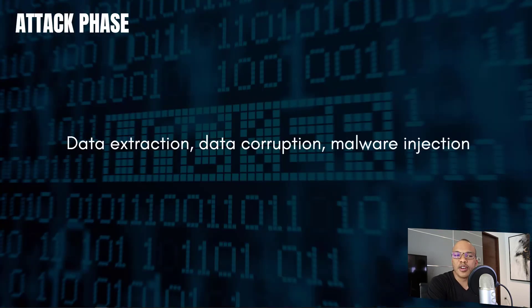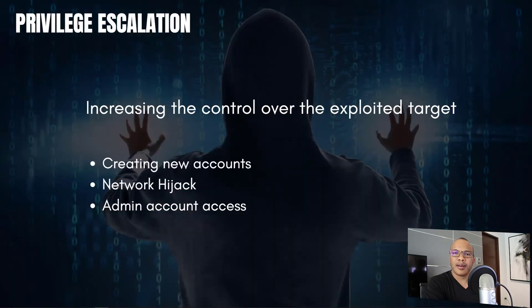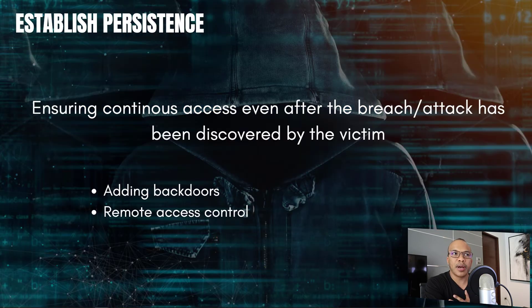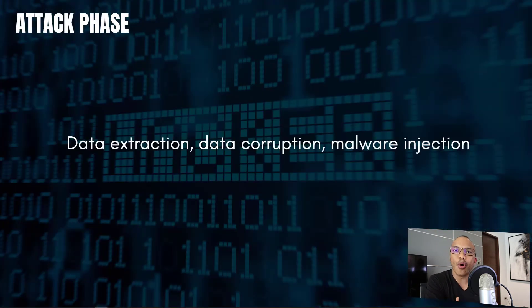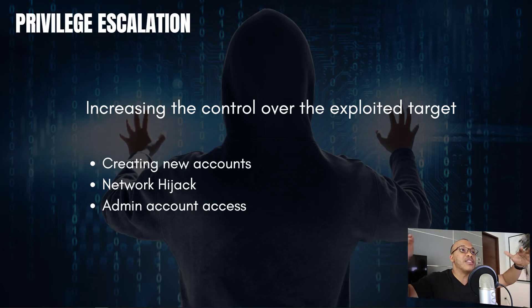This leads us to step number five: the actual attack phase. Data extraction, data corruption, malware injection — this is the actual hack itself. But notice that the attack phase typically comes after privileges have been escalated and, in certain situations, after persistence has been established. It's not that you exploit a weakness and immediately begin attacking. You want to make sure you gain as much control as you can. Think of privilege escalation like a burglar who enters a house at night — they enter the living room first, but they're not going to stop there. They'll go upstairs, look at all the bedrooms, go to the kitchen if possible. That's kind of the whole point behind privilege escalation — you want to gather as much control as you can over the exploited target.